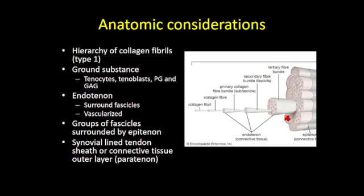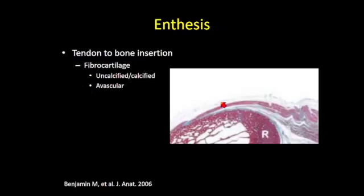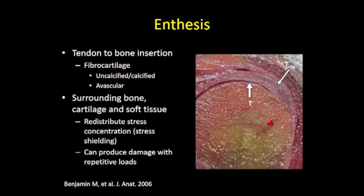Tendons are surrounded by a fibro-adipose connective tissue sheath, which confers very high tensile strength. Most tendon tears occur near the sites where tendons insert on bone, through a fibrocartilaginous avascular zone. Tendons typically insert onto bone next to a very convex surface consisting of bone, articular cartilage, or soft tissue, which has the property of redistributing the stress load on the tendon through a phenomenon known as stress shielding.